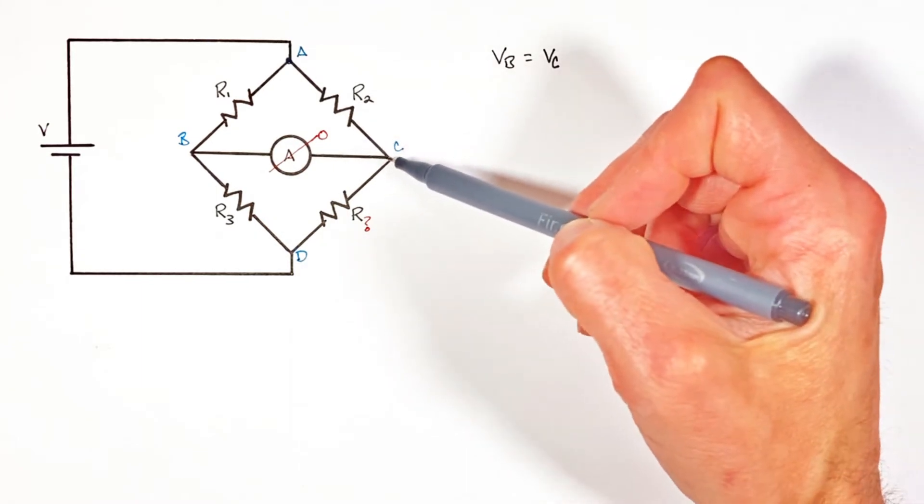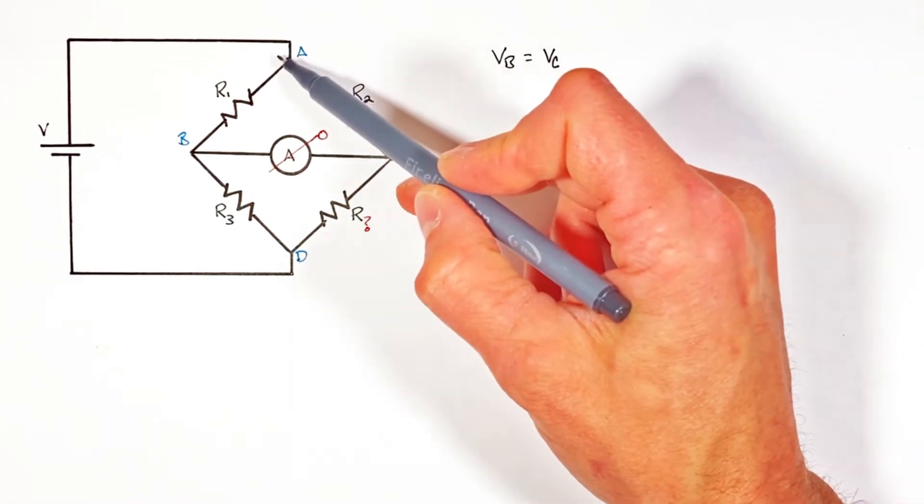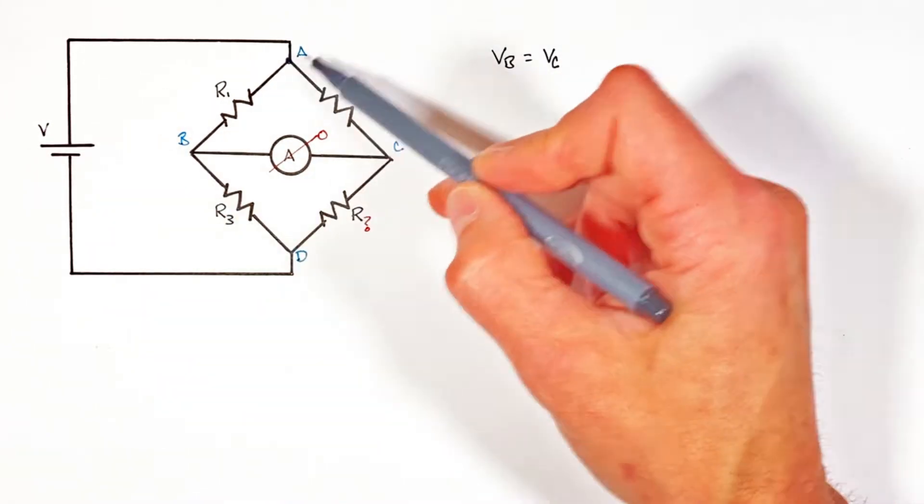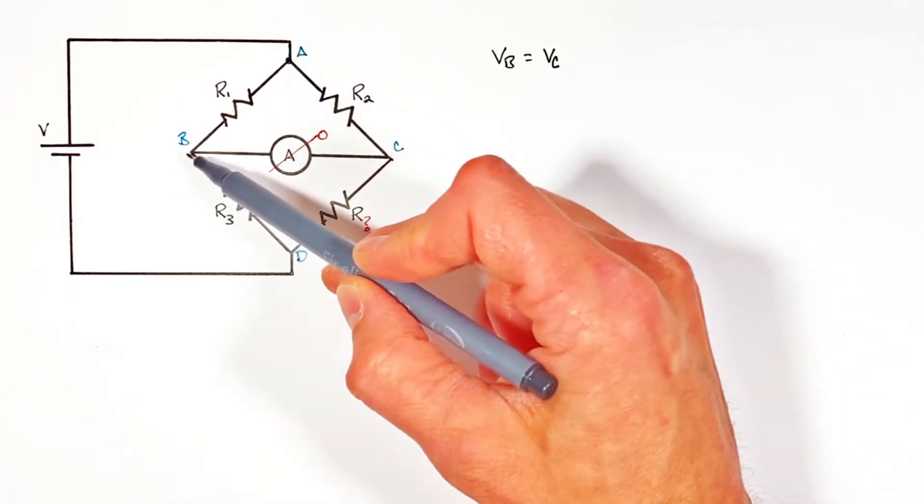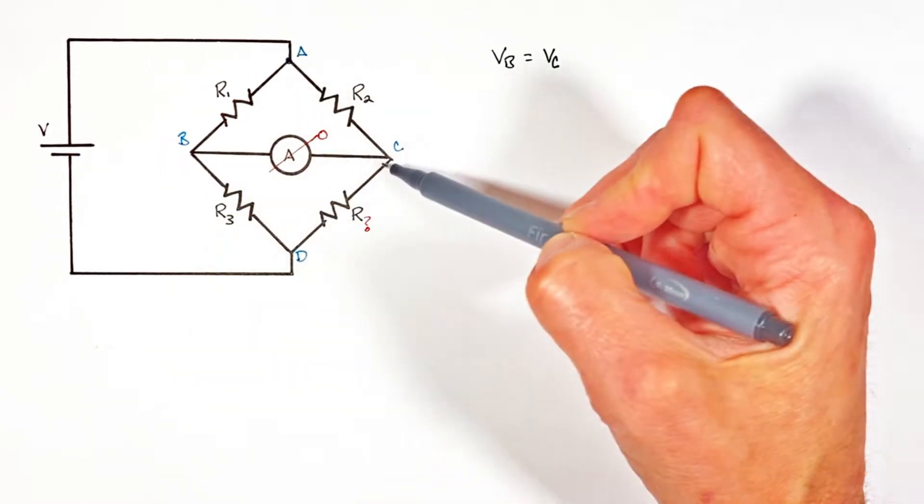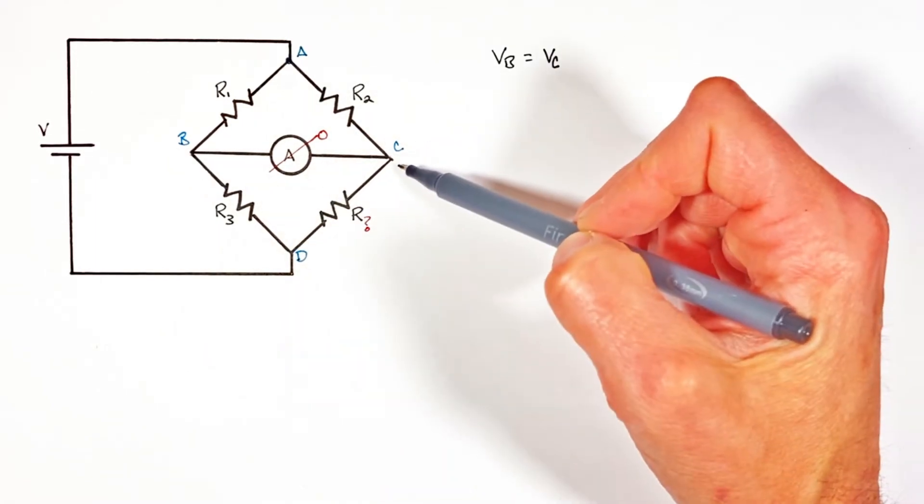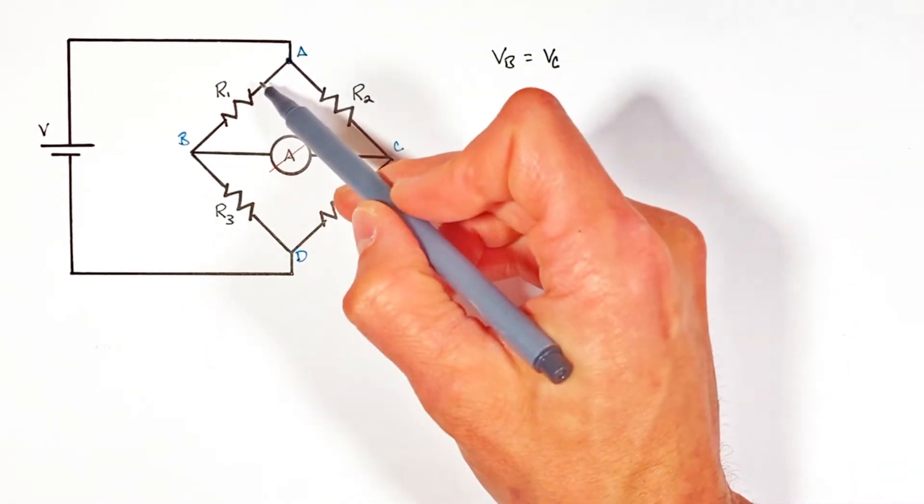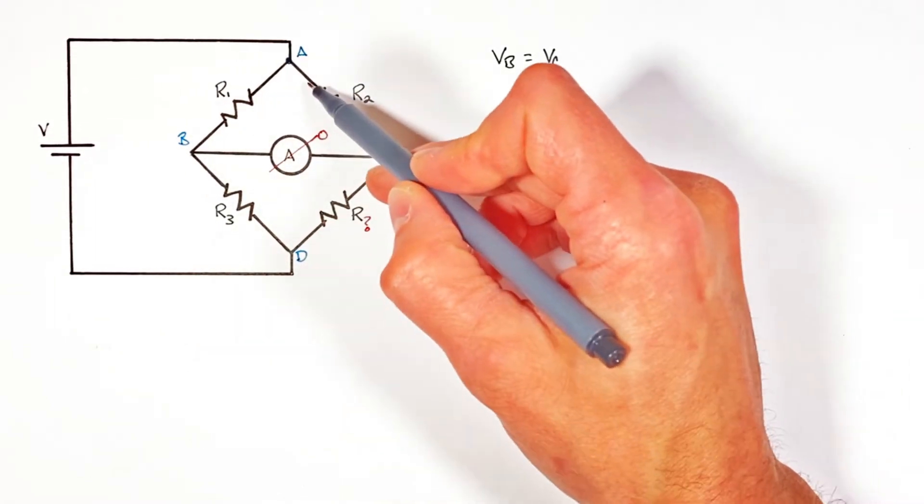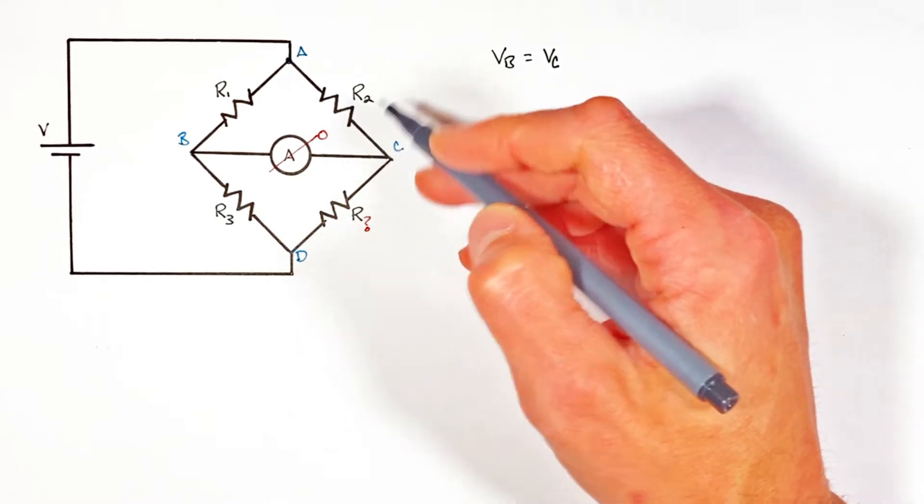And ultimately what that means is the voltage drop across R1 is the same as the voltage drop across R2.